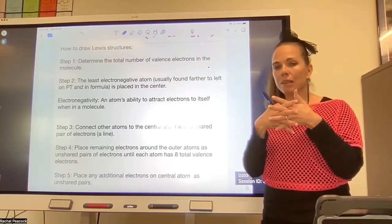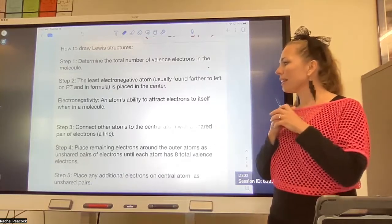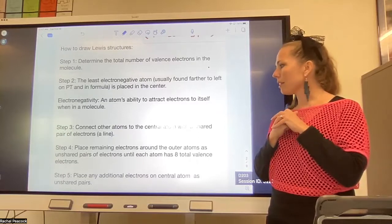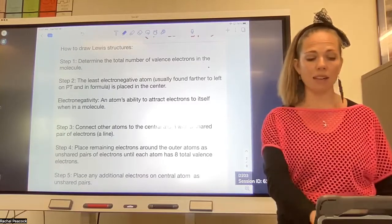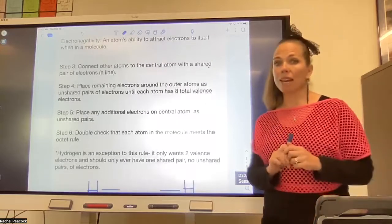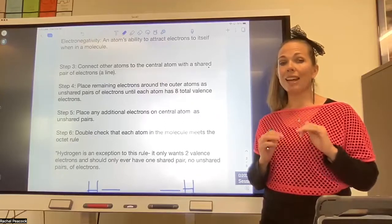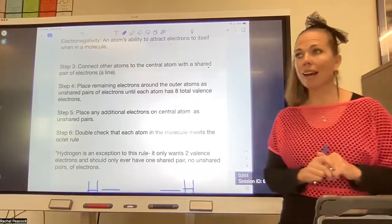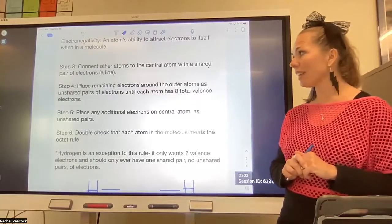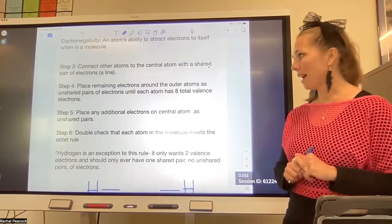Step three: connect other atoms to the central atom with a shared pair of electrons, in other words a line. Place remaining electrons around the outer atoms as unshared pairs until each atom has a total of eight valence electrons when you add up dots and lines. If you have any electrons left over, those will go on the central atom, and you need to double check that each atom is meeting the octet rule.